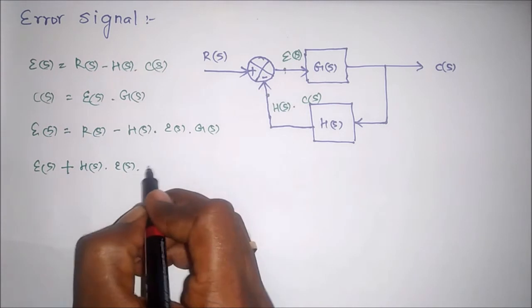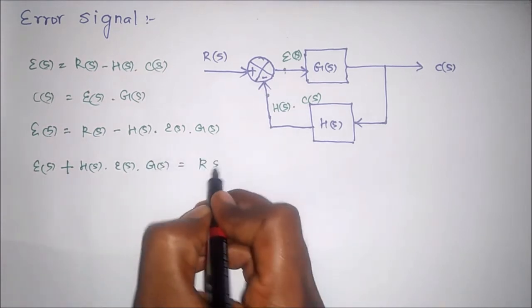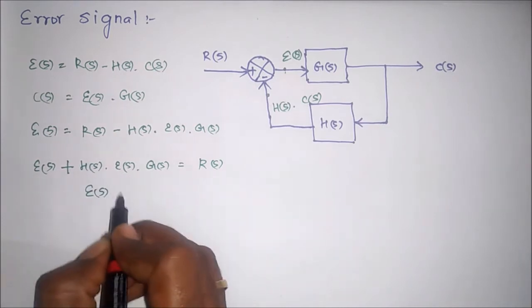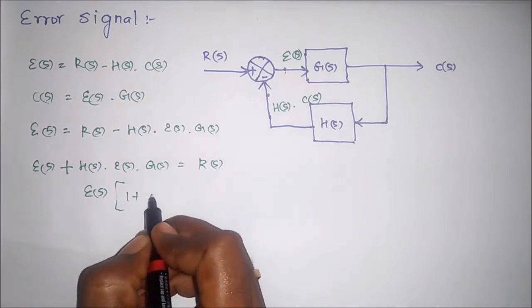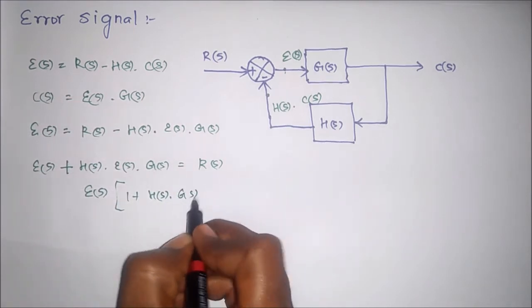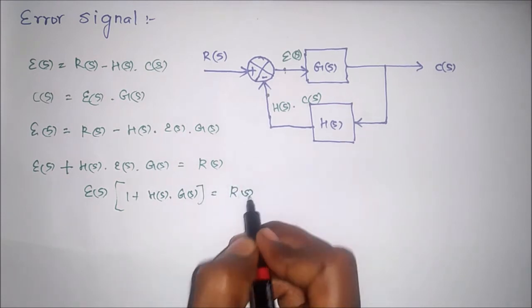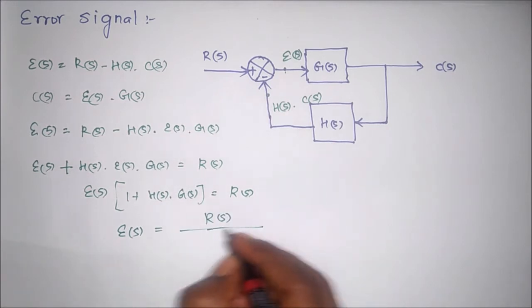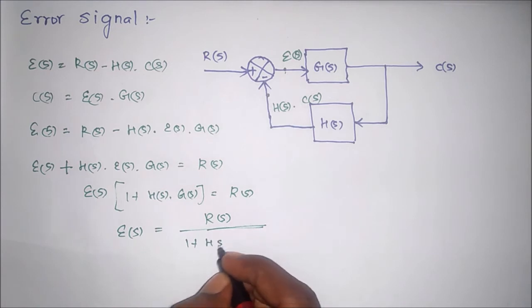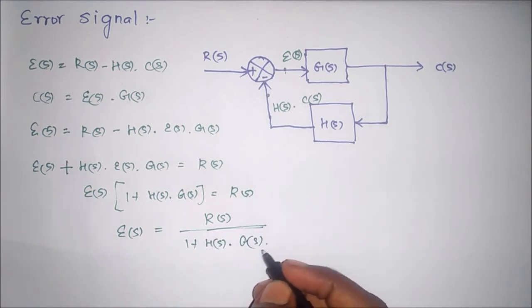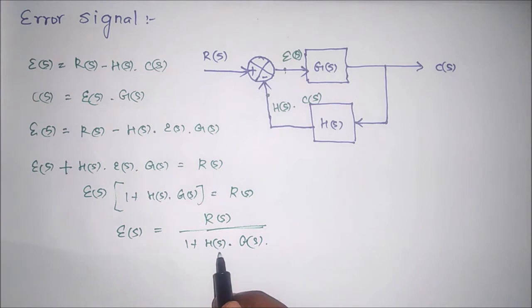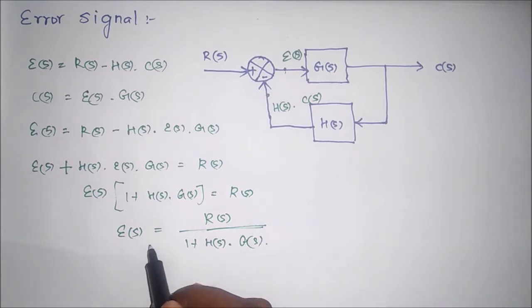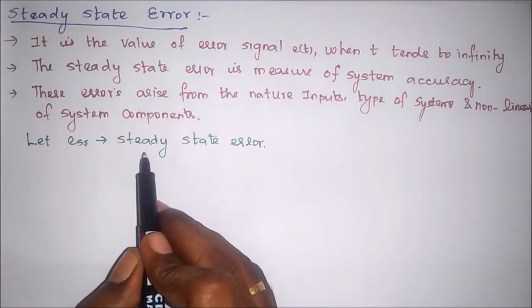So we can take E(s) outside from these two terms. Therefore E(s) into one plus H(s) into G(s) equals R(s). Finally, error E(s) equals R(s) divided by one plus H(s) into G(s). Error will vary depending upon its parameters and also the order of the system. This is the expression for the error signal of a closed loop system.